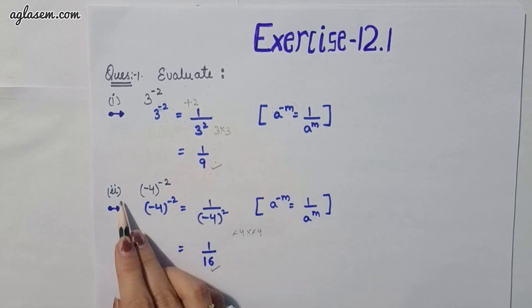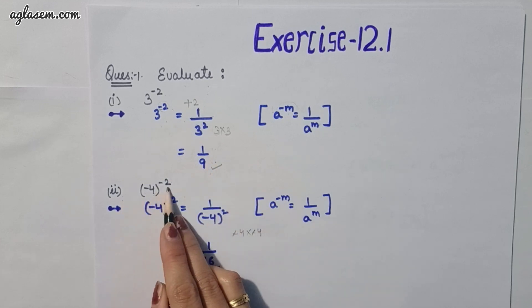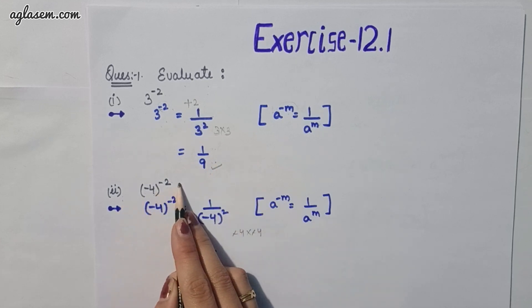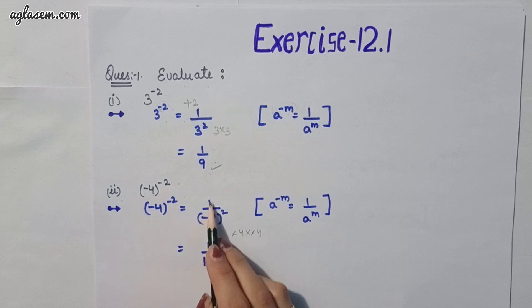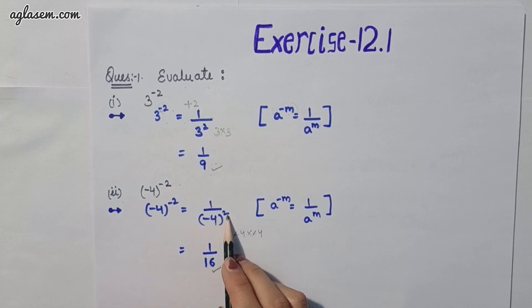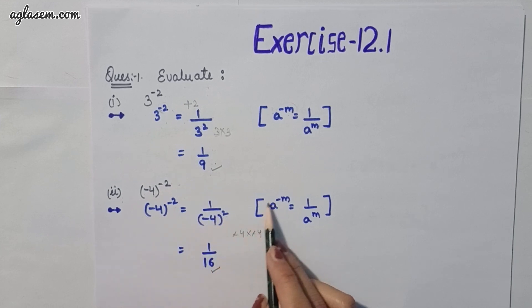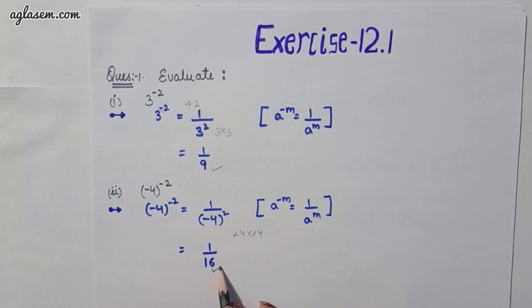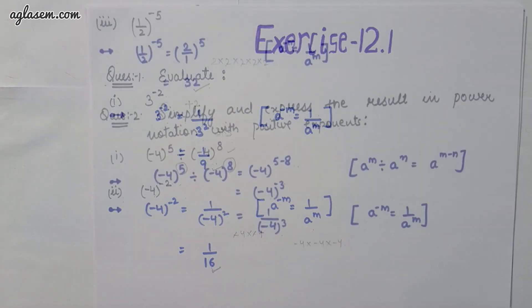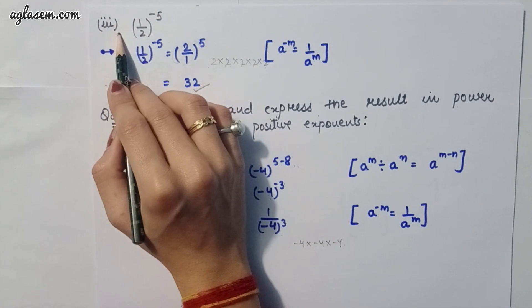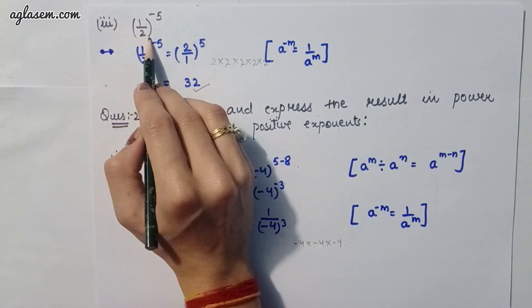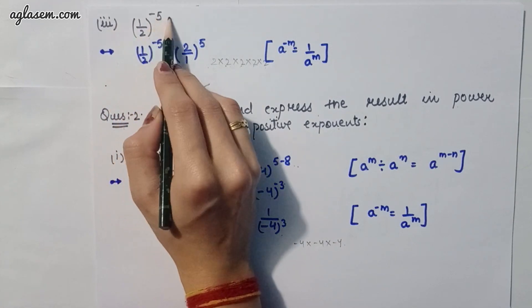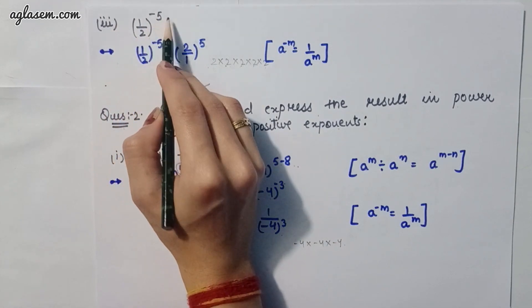Coming to the second part: (-4)^(-2). Applying the same formula, the answer is 1 upon (-4)^2, which gives us 1 upon 16.